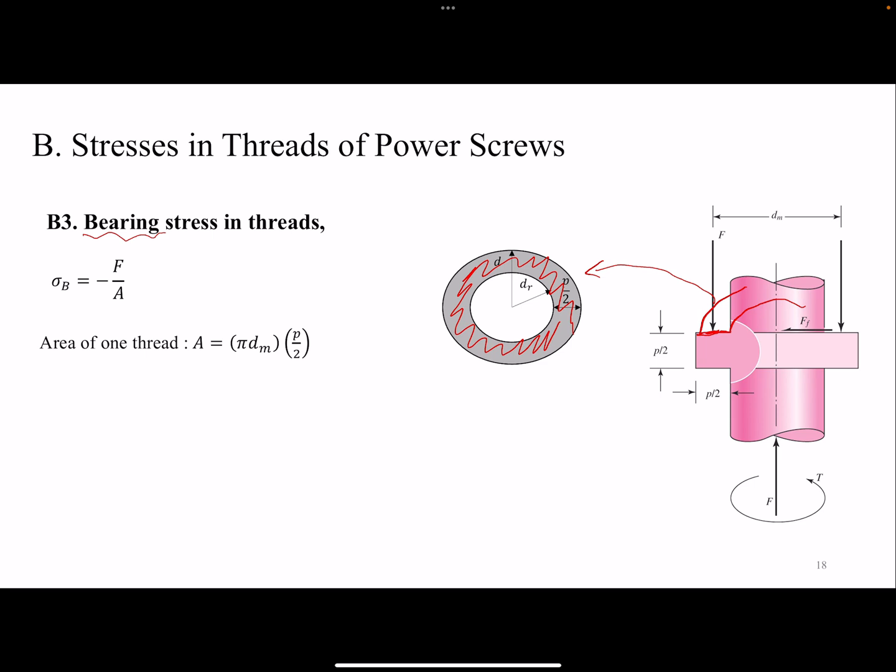The equation is the same. F over A, the area of one thread. I'll take the mean diameter. I have DR and D, so I use DM, so somewhere in the middle. And for all the engaged threads, the only difference is that we multiply by NT.